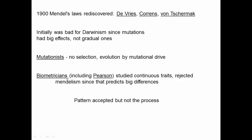In the early 1900s there was a major crisis and tumult around evolutionary theory. Everyone agreed that things had evolved, were related, and had closer and more distant relatives — but what was the process? Was it natural selection as Darwin said, or some mutational drive, or was genetics irrelevant as the biometricians argued? It was a big mess; nobody was settled on what process was causing things to evolve over time.